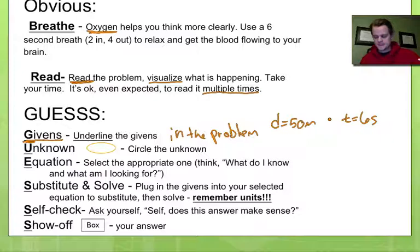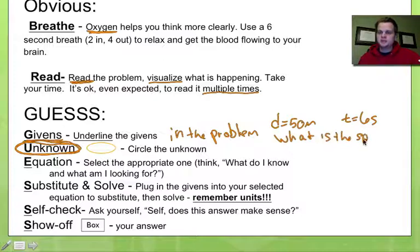The next thing is to circle the unknown. So you underline the things in the problem that you're given, but then you circle the unknown so you know what you're looking for. This example problem might be asking something like, what is the speed? And so what you would do is go ahead and circle speed. That's what you're looking for.